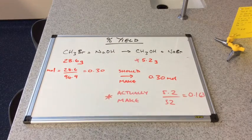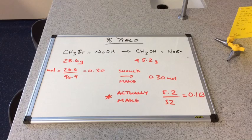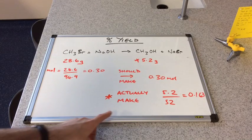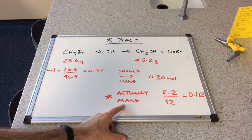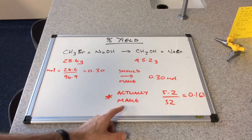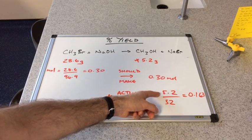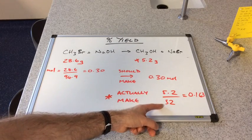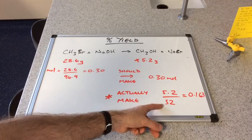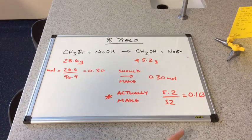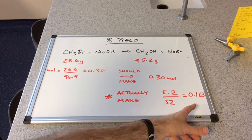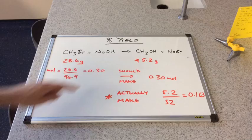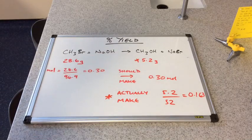Because we've been told how many grams of methanol we've produced, we can work out the actual moles that we've made. We've made 5.2 grams of a substance with an MR of 32 grams per mole. So we've actually made 0.163 moles of product. Remember, we should have made 0.30.